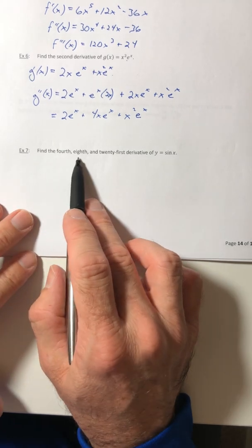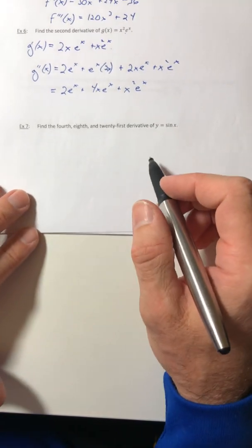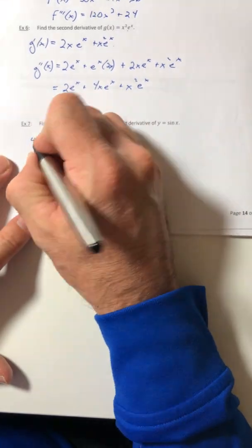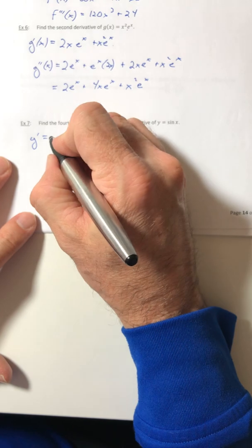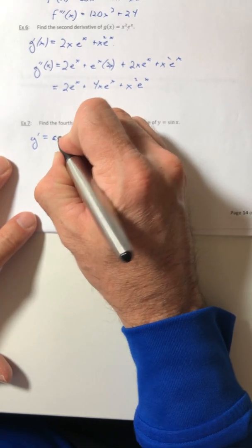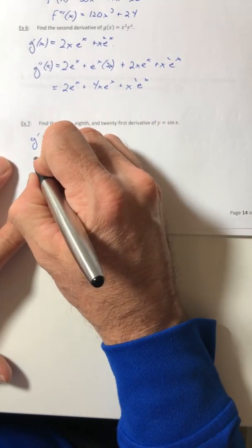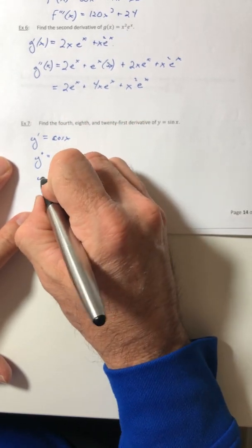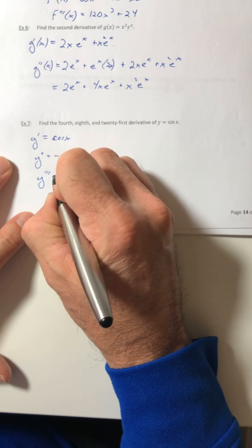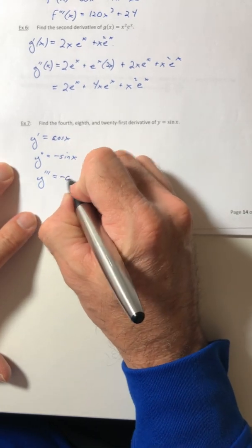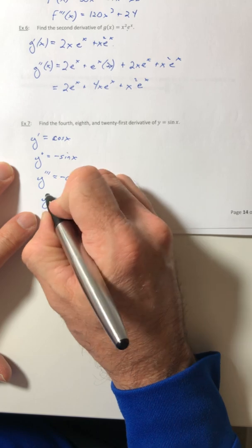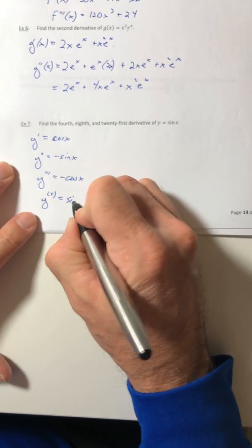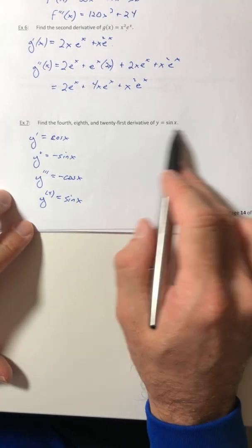Example 7. Find the 4th, 8th, and 21st derivative of sine. Let's just go for it. First derivative would be cosine. Second derivative. Negative sine. Third derivative. Negative cosine. And the 4th derivative is sine. I got right back to the original function.